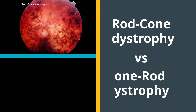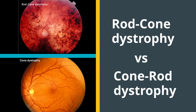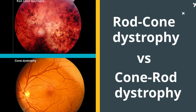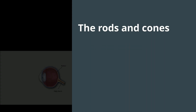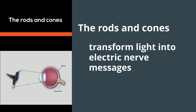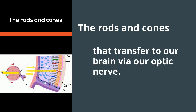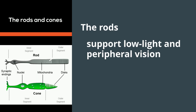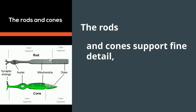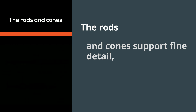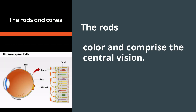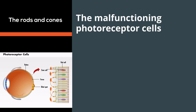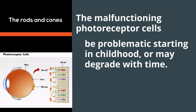Rod Cone Dystrophy vs. Cone Rod Dystrophy. The rods and cones transform light into electric nerve messages that transfer to our brain via our optic nerve. The rods support low light and peripheral vision, and cones support fine detail, color, and comprise the central vision. The malfunctioning photoreceptor cells may be problematic starting in childhood or may degrade with time.